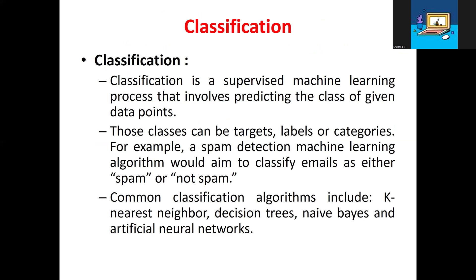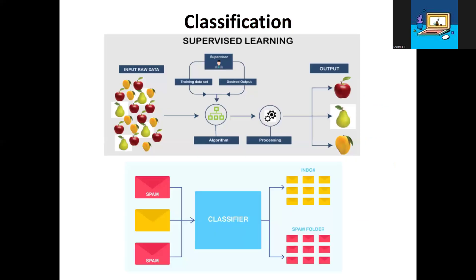In classification, it is a supervised machine learning process that involves predicting the classes of a given data point. The classes can be target labels or categories. For example, spam detection — whether a mail is spam or not spam. The common classification algorithms include K-Nearest Neighbor, Decision Tree, Naive Bayes, and Artificial Neural Network. These are the common algorithms used.